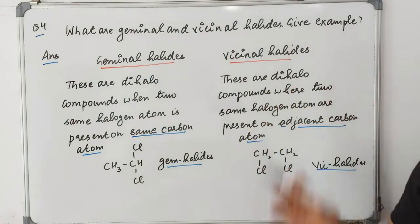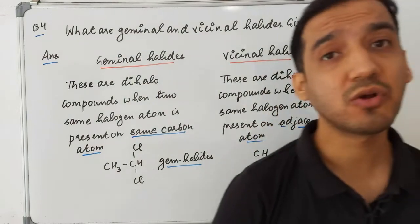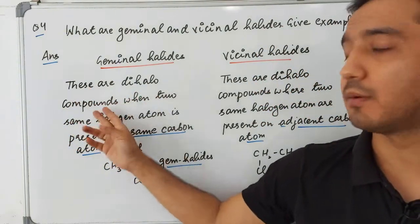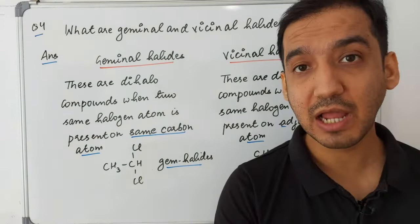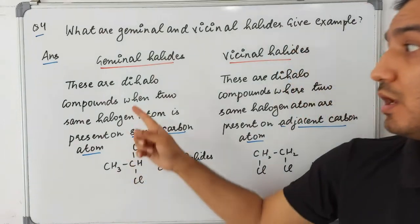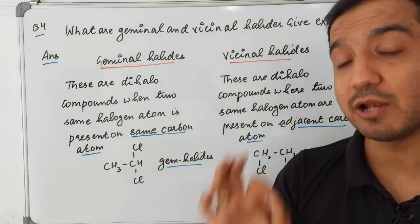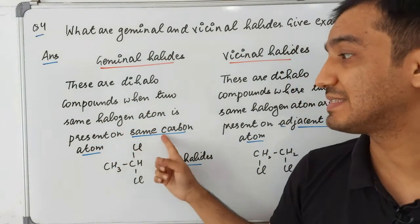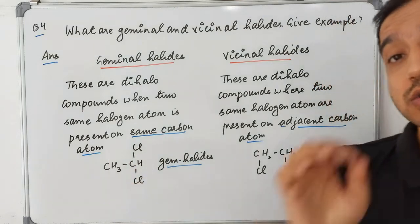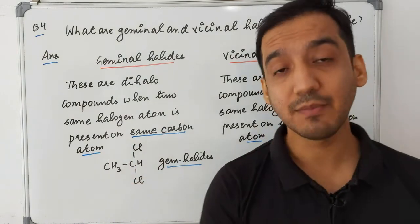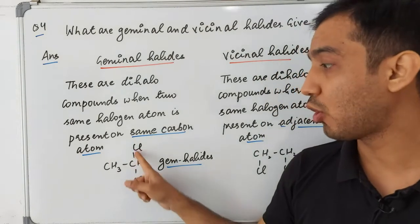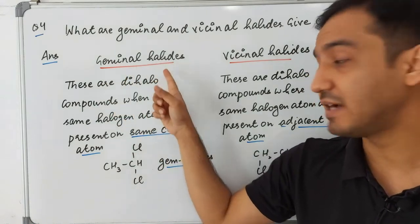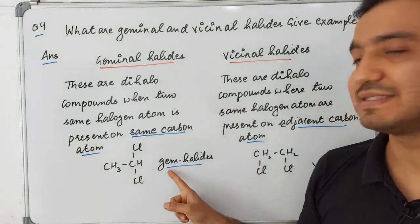Question four is: what are geminal and vicinal halides? Geminal halides are dihalo compounds where two same halogen atoms are present on the same carbon atom. They are also called gem-halides.